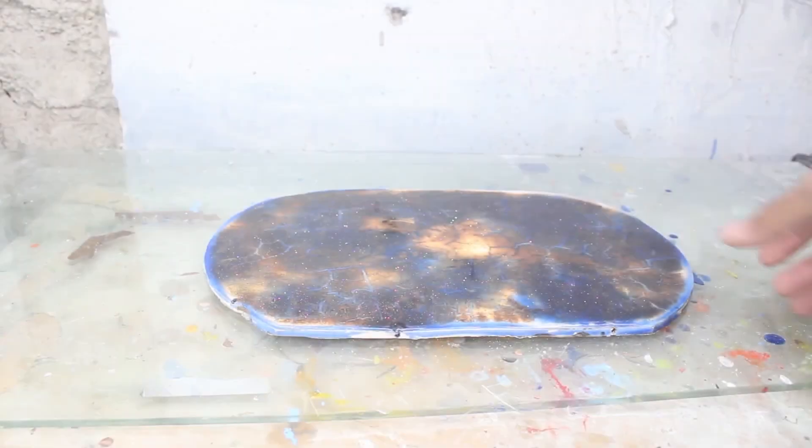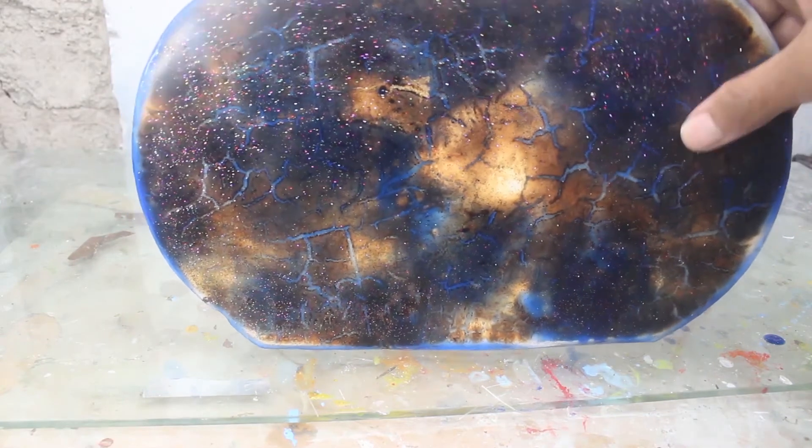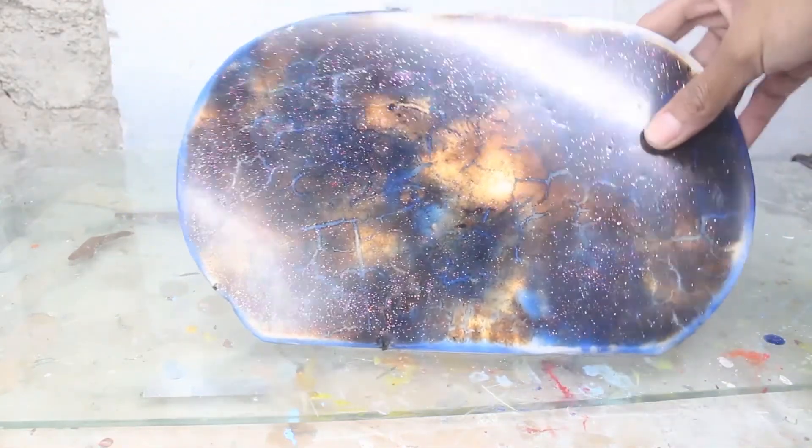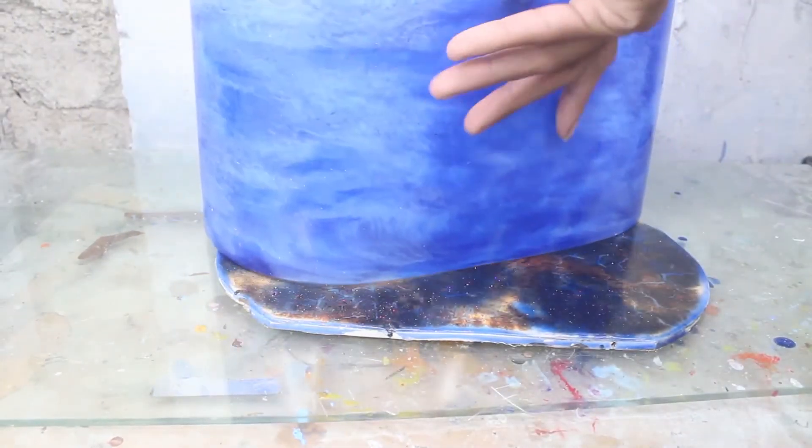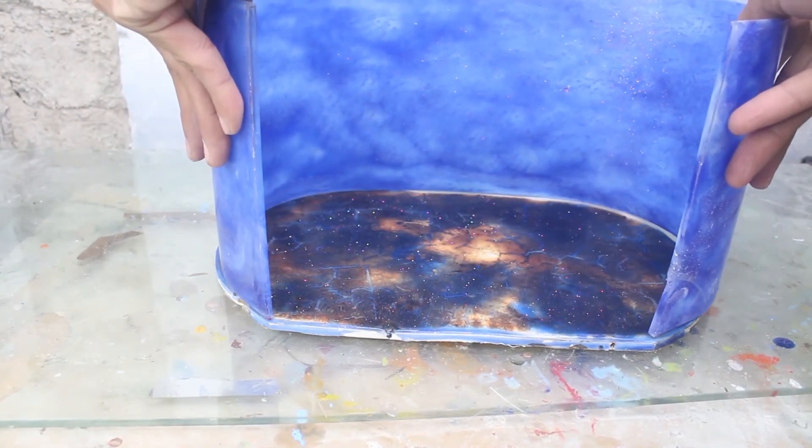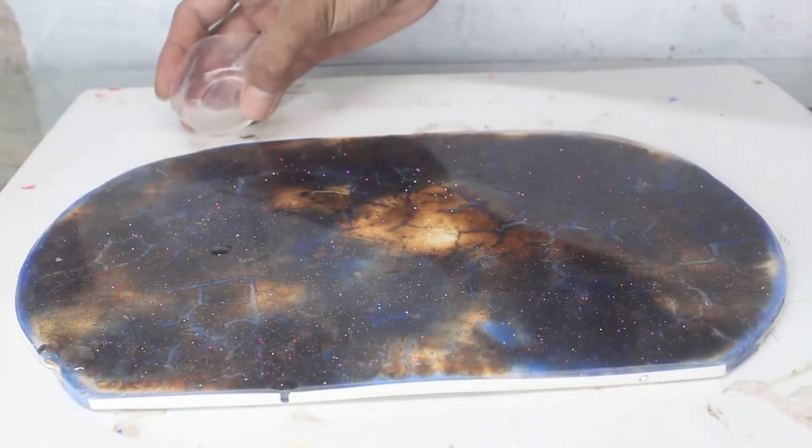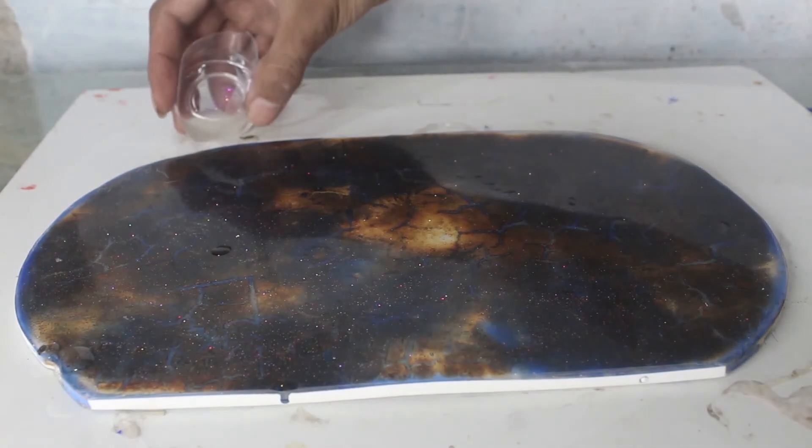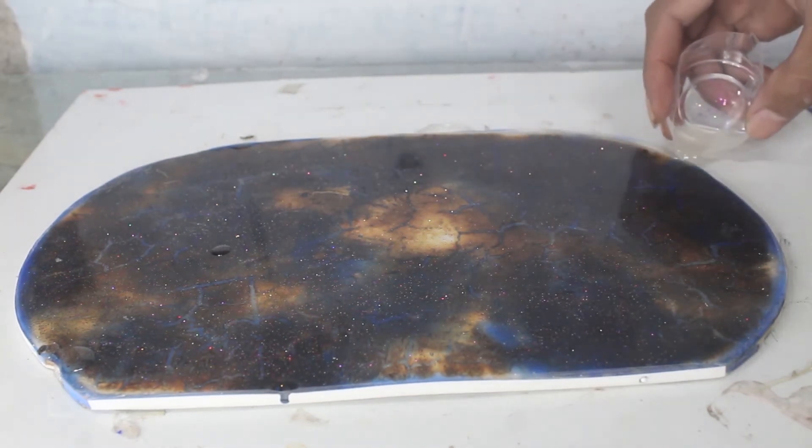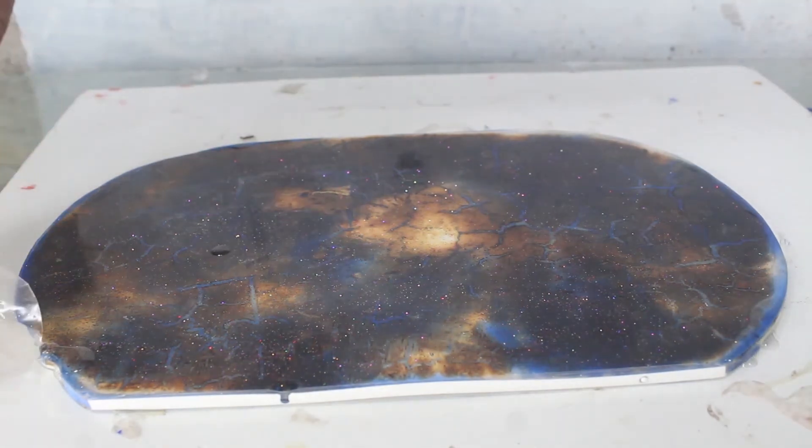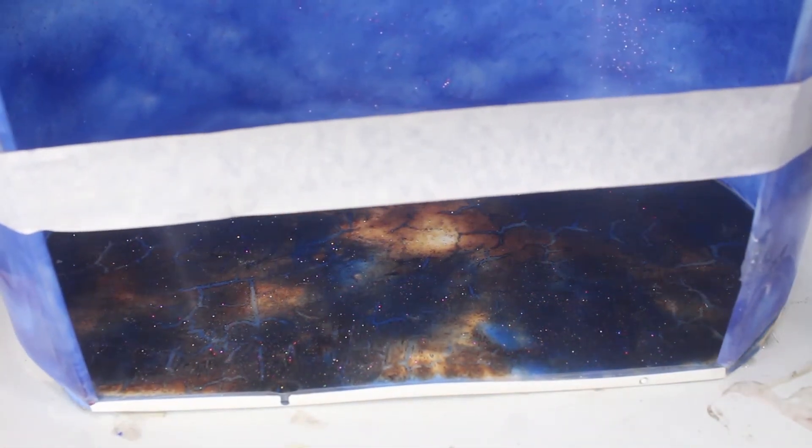Ini setelah halus. Sudah seperti kaca. Disini saya akan ambil lagi untuk resin pertama. Disini saya akan satu ini disini. Kasih lem. Untuk lem saya gunakan resin juga. Inilah resinnya. Saya akan gunakan lampu sebagai lem.